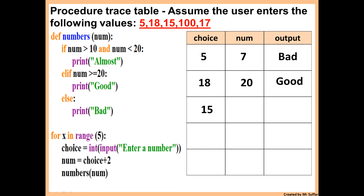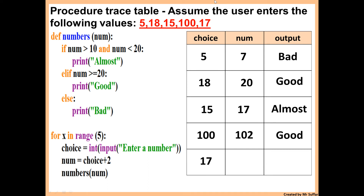The for loop runs five times in total because 'for x in range(5)' means five iterations. Next choice is 15, plus 2 gives 17 — which satisfies the first if condition (greater than 10 and less than 20), so it displays 'almost'. Then choice 100 plus 2 is 102, displaying 'good'. Finally, choice 17 plus 2 is 19, which is between 10 and 20, so it displays 'almost'.